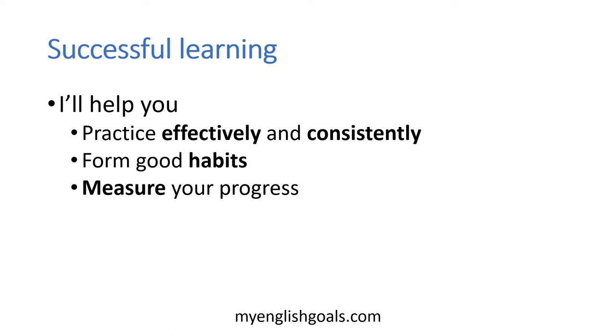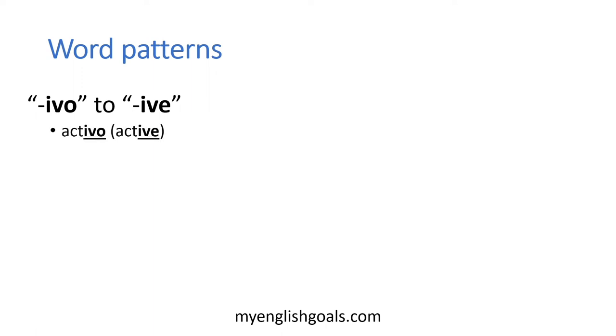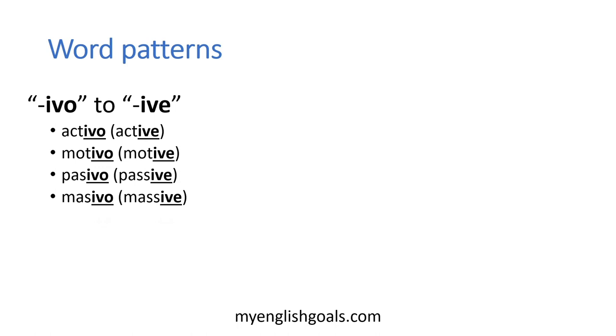Pero esto no es la única forma que vas a aprender vocabulario con este curso. También te voy a enseñar los patrones de las palabras y las formas que son parecidas en inglés y en español para ayudarte a deducir miles de palabras en inglés, aunque sea que nunca los hayas visto. Por ejemplo, cuando hablamos de palabras que acaban en -ivo en español, muchas veces acaban en -ive en inglés. Por ejemplo: activo — active, motivo — motive, pasivo — passive, masivo — massive, elusivo — elusive, adictivo — addictive. Ya que sabes este patrón, podrás deducir cientos de palabras que siguen este mismo modelo en inglés.